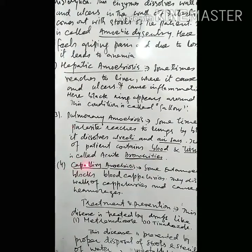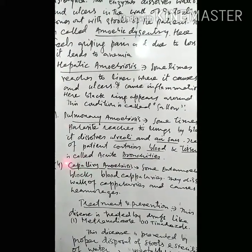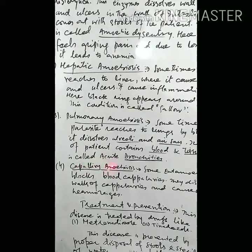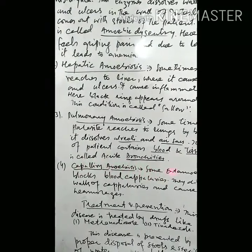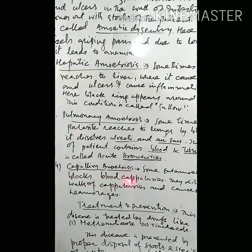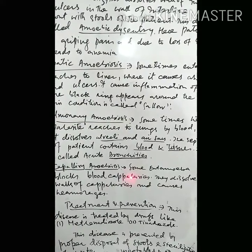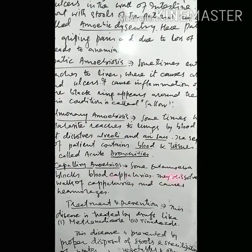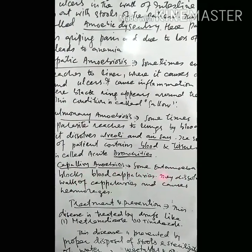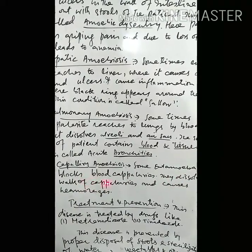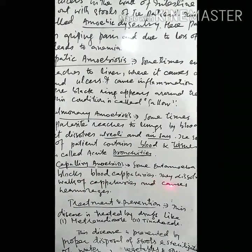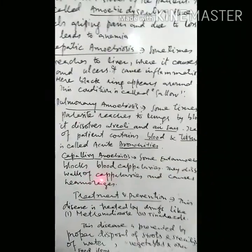The fourth disease caused by Entamoeba histolytica is capillary amoebiasis. Sometimes Entamoeba histolytica blocks the blood capillaries and dissolves their walls, causing hemorrhage. When it breaks the walls of the capillaries, this results in blood hemorrhage.